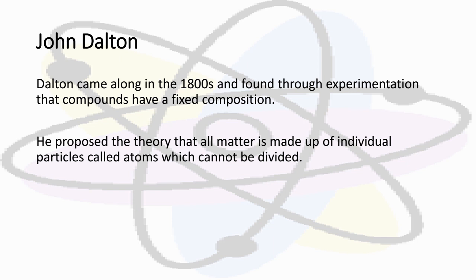Next in line was John Dalton. Dalton came along in the 1800s and found through experimentation that compounds have a fixed composition. He started with water and noticed that if you take apart water, you get two parts hydrogen and one part oxygen every single time. He proposed the theory that all matter is made up of individual particles called atoms which cannot be divided. He basically had studied Democritus and used the same term.